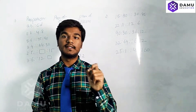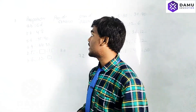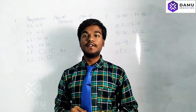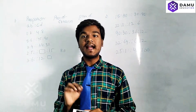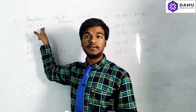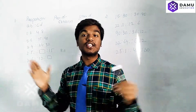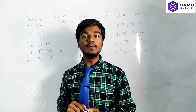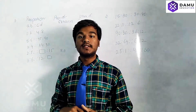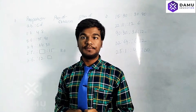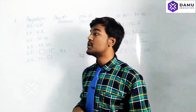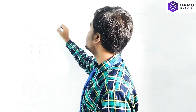To verify proportion, we take the product of extremes and the product of means — those two must be equal. Extremes are the outside values: a and d. Means are the inside values: b and c. Product of extremes means a × d.